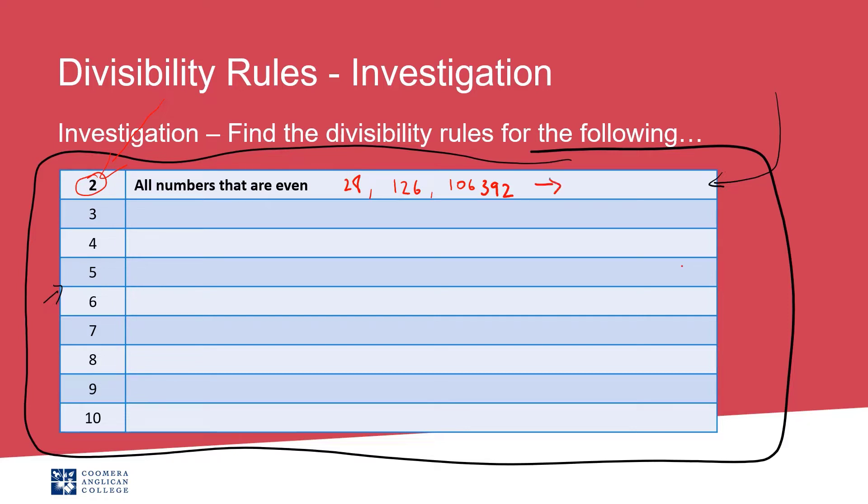If a number is odd though, let's say I've got 27, that means that I can't divide 27 by 2. But it doesn't necessarily mean that it's a prime number either, because I can also divide 27 by 3.